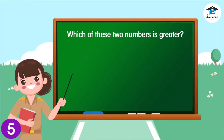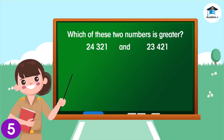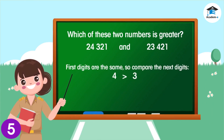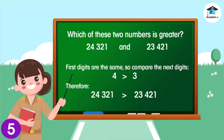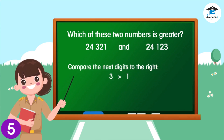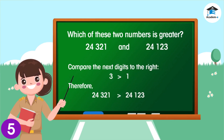Still on numbers with the same number of digits: if the first digits are the same, then you'll have to compare the next digits to the right. If the second digits are also the same, then compare the next digits to the right.